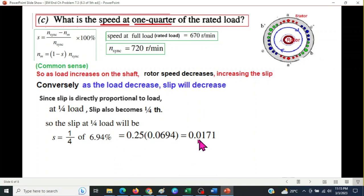Now we will use this slip to find the new rotor speed. So the resulting rotor speed at this slip or at this one quarter of the load will be 708 revolutions per minute.